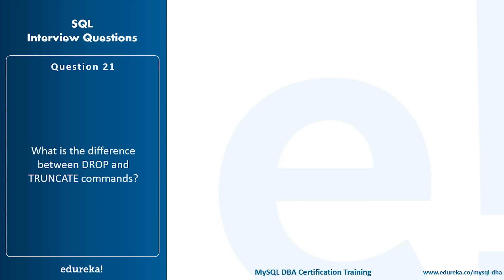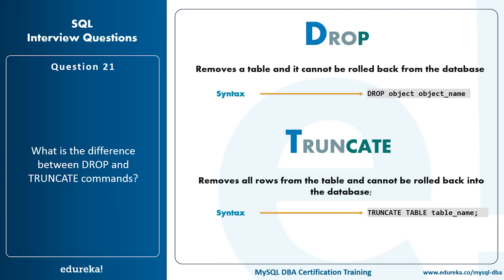What is the difference between the DROP and TRUNCATE commands? The DROP command completely removes the table from the database and cannot be rolled back. The TRUNCATE command removes all the rows from the table but keeps the table structure, and also cannot be rolled back. The syntax for DROP is: DROP OBJECT [object_name]; and the syntax for TRUNCATE is: TRUNCATE TABLE [table_name].